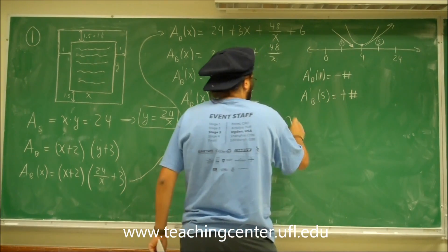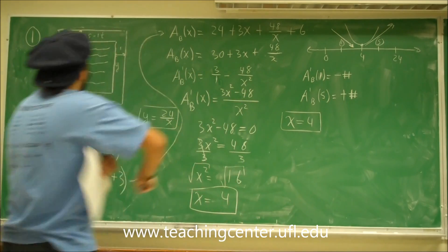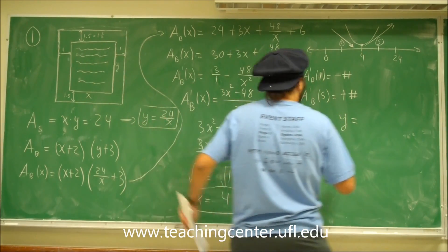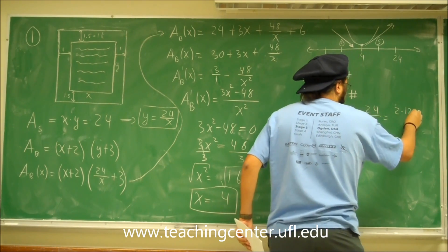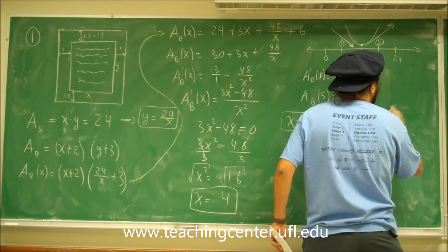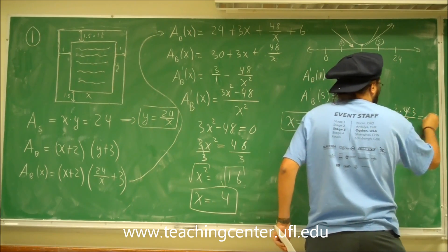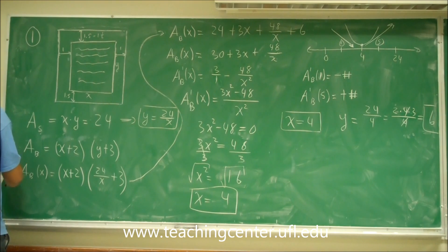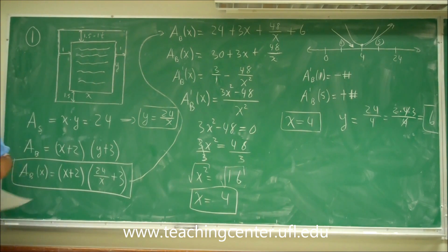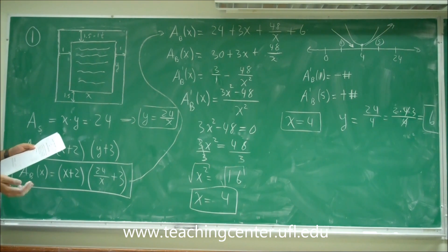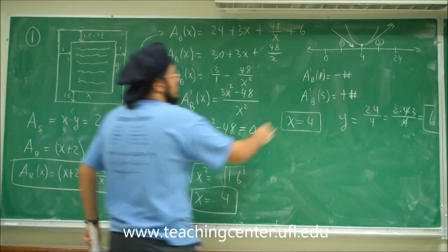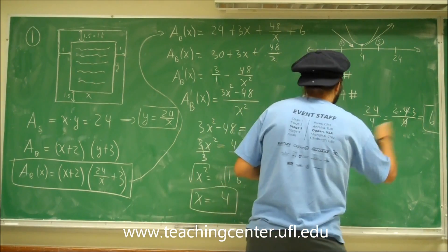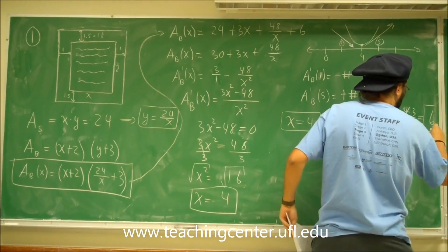When x = 4, we have the least amount of paper used. With x = 4, we find y: y = 24/x = 24/4 = 6. So the print area dimensions are x = 4 inches and y = 6 inches.